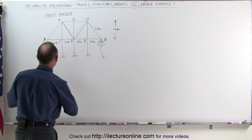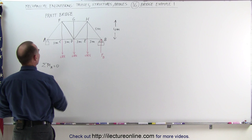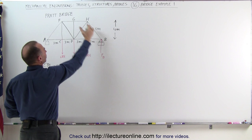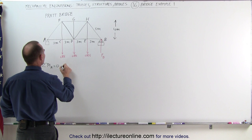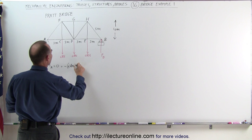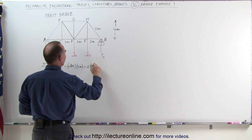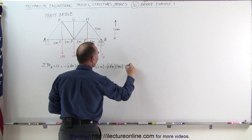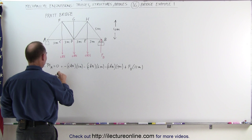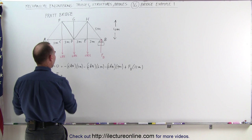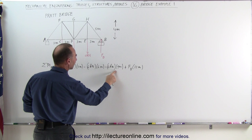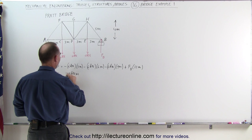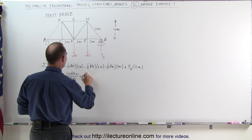Using the concept that the sum of the moments about point A must equal zero, we have the clockwise moments caused by these three forces, and the counterclockwise moment caused by F sub B. Clockwise is considered negative, so this becomes minus 6 kilonewtons times 3 meters, minus 6 kilonewtons times 6 meters, and minus 6 kilonewtons times 9 meters, counterbalanced by F sub B times 12 meters. That gives F sub B equal to 108 kilonewton-meters divided by 12 meters, which is 9 kilonewtons.